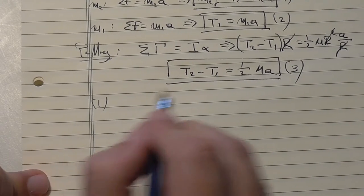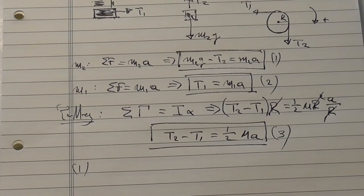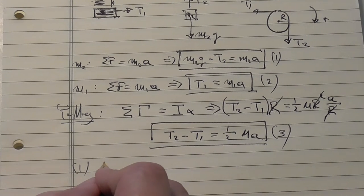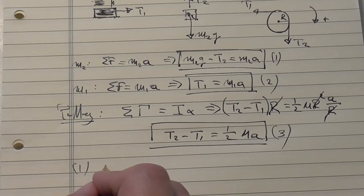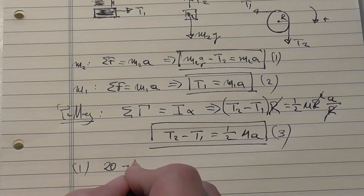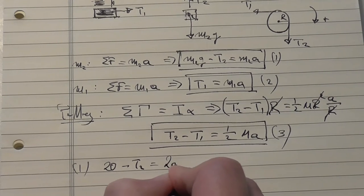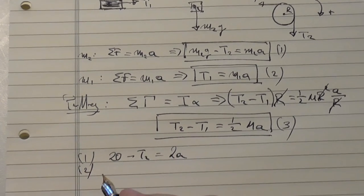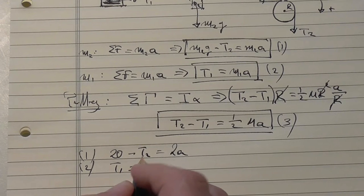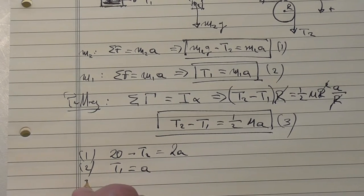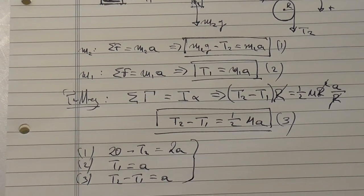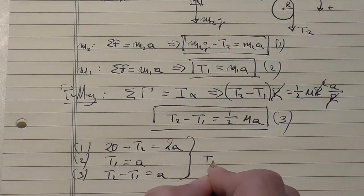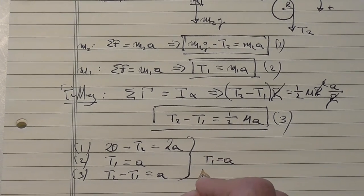The moment of inertia was given one-half mr squared. And the angular acceleration is just the linear acceleration over the radius. Notice that all the radii will cancel in this equation. So I will get my third equation, because I need three equations for three unknowns, since the tensions are now different.